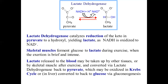Skeletal muscles ferment glucose to lactate during exercise when the exertion is brief and intense. If the exercise continues for a longer duration, lactic acid will produce toxicity. So brief and intense exercise leads to lactate production and fermentation. Lactate is released to the blood, may be taken by other tissues, and converted back to pyruvate by lactate dehydrogenase. Pyruvate may then be oxidized via the Krebs cycle or converted back to glucose through gluconeogenesis.